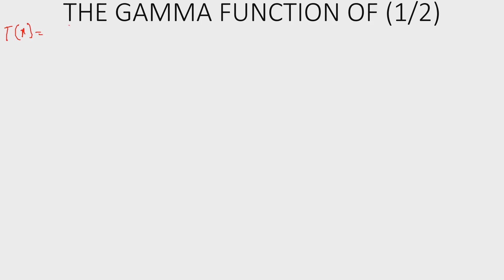Today we are going to be looking at how to prove the gamma function of half. The gamma function is denoted as the integral of t raised to the power of x minus 1, then e raised to the power of minus t, dt.